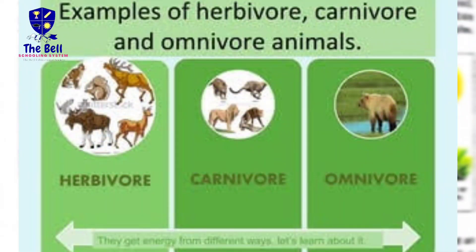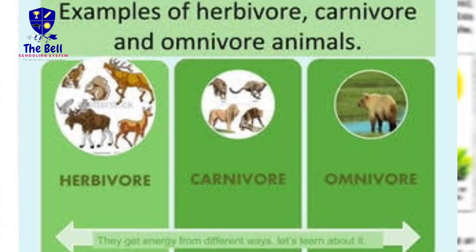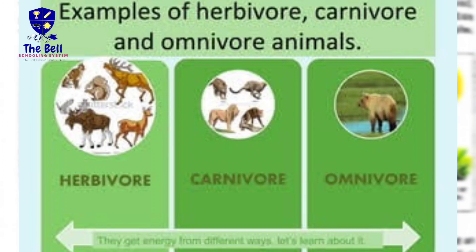Herbivore animals depend directly on plants for their nutrition. Carnivores depend on other animals and eat their meat. Omnivores feed on both plants as well as animals. Thus, when you eat meat, you are indirectly eating food prepared by plants. Green plants get energy from the sun, so the sun is the ultimate source of energy in the entire living world.